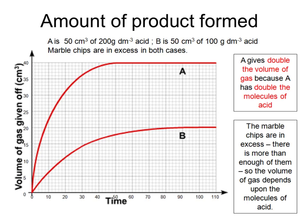Now, the difference between the two situations is that acid A is 50 cubic centimeters of a 200 grams per cubic decimeter acid, whereas acid B is the same volume, but half the concentration. Now, because there's half the concentration of acid B, that means there's half as many particles of the acid, and as it's the acid which decides how much product we get, there's going to be half as much product made, and that's why the graph for B levels off at half the volume of gas, as does the reaction for A. However, because A is also more concentrated acid, A has got a steeper graph showing a faster rate of reaction.